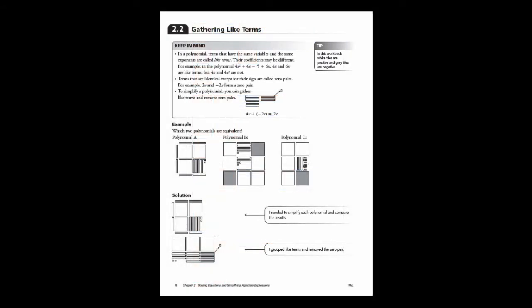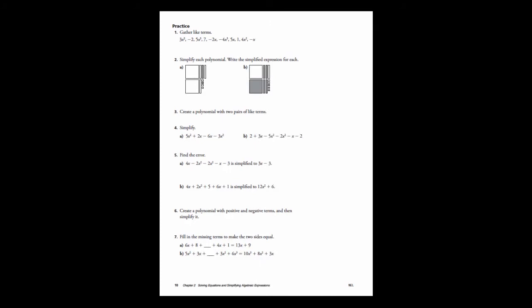The workbook picks up where the interactive whiteboard lessons leave off. Following the summary in the Keep in Mind feature, a series of solved examples are provided that students can refer to as they answer the practice questions that follow. The examples are presented with the mathematical solution on the left and the student thinking and reasoning on the right. The workbook includes lots of practice for students to complete right in the workbook, with no need for students to write down questions and lots of space available to answer each question.